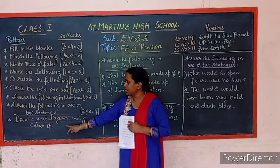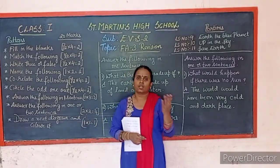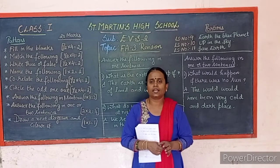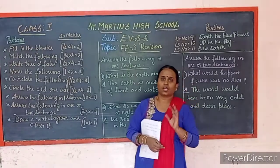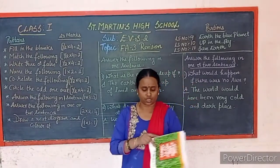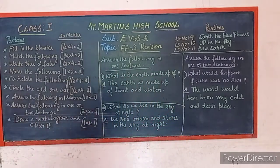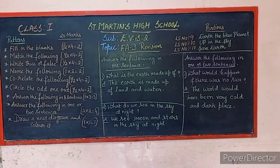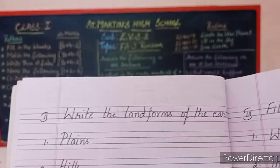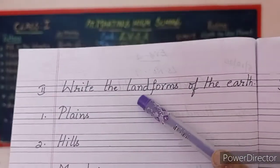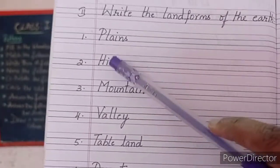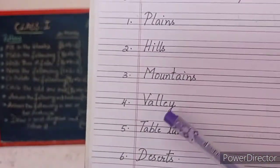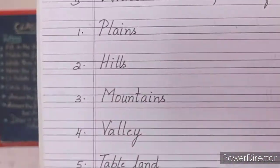The last section is draw a neat diagram — they may give any diagram picture and you have to draw it neatly and color it. Now, take your classwork and revise. The first section has hard words to revise. Next, the landforms of the earth: you have plains, hills, mountains, valley, table land, and deserts.